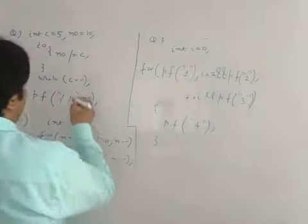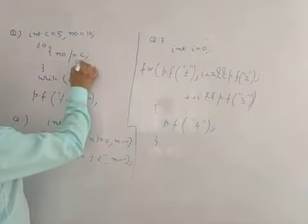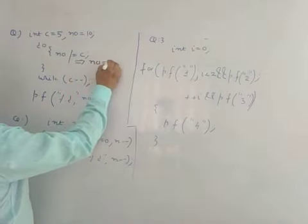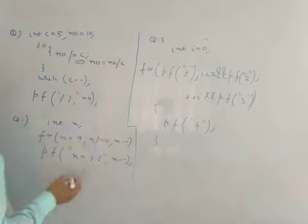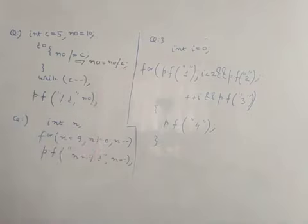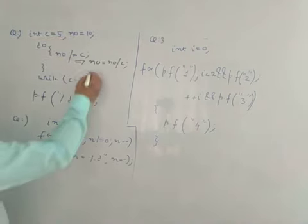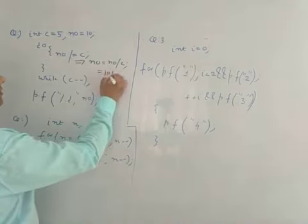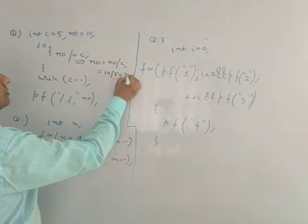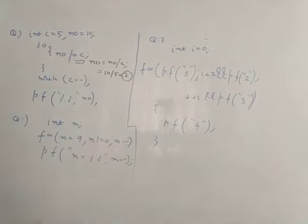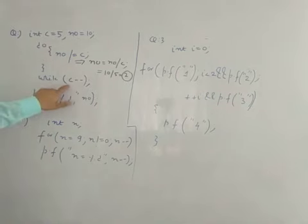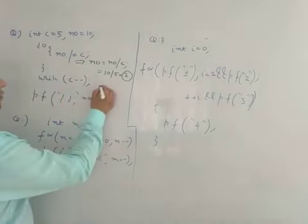So what does num /= c mean? It means num is equal to num divided by c. Now c is 5 and num is 10, so it is 10 divided by 5 which is 2. So the value of num becomes 2. Now in the do-while with c--, the value of c is right now 5.